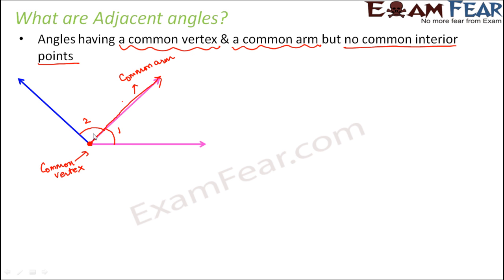So this proves that they are located next to each other. Now do they have common interior points? For angle 1, the interior points are located in this region. For angle 2, the interior points are in this region. There is no point common to both, because the regions are separate. So all three conditions are satisfied, and this proves that angle 1 and angle 2 are adjacent angles.